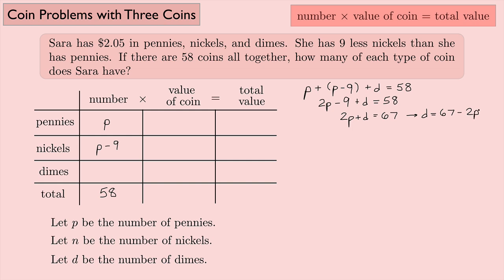So I've written the number of dimes in terms of P, the number of pennies. This will be 67 minus 2P. That's really the hardest part of the problem, just getting all this part down, and especially this one here. But if you use this idea of writing out what we know, knowing that when you add these three up you should get 58, then you should be able to do it.